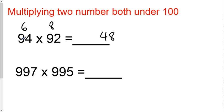Then you can take either 94 and subtract from it 8, or you can take 92 and subtract from it 6. Either way, you get the same answer. I would recommend you take the smaller number, in this case 92, and subtract 6 from it. 92 minus 6 is 86.